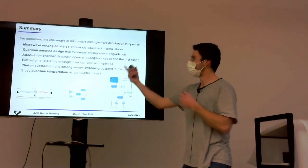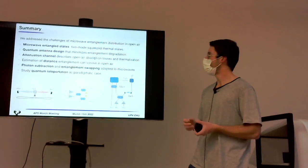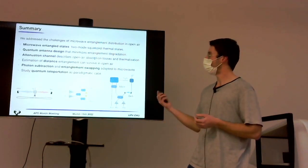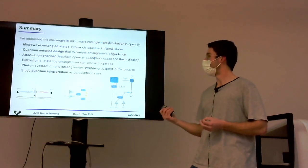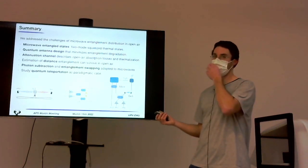So, to sum up this thing, we have seen the states that are used and produced in microwaves, the entangled states that are used as resources in microwaves, with a two-mode-squish thermal state. We have seen the effects of the antenna and the environment. We have estimated the distances that entanglement can survive in open air.